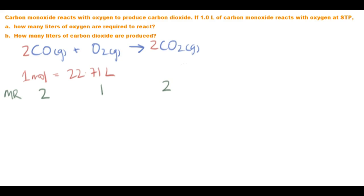So if we start off with one liter of carbon monoxide, we have one liter of carbon monoxide. Now the ratios of the volume stay the same, just as the ratio of the moles are like this.